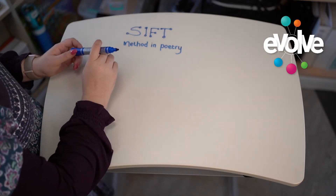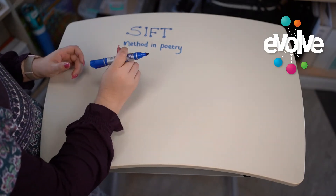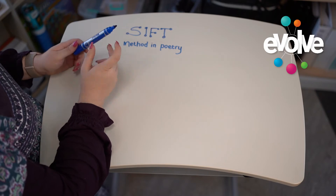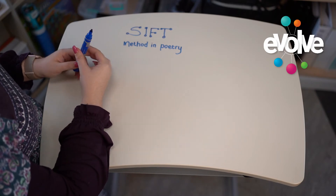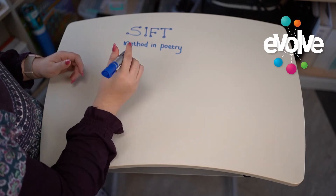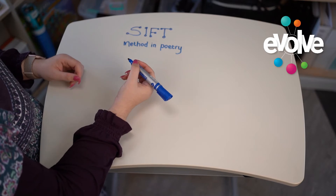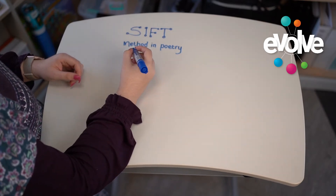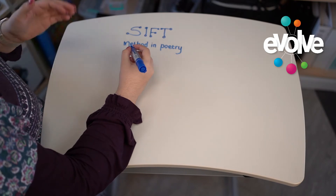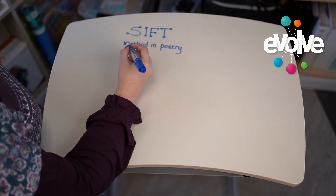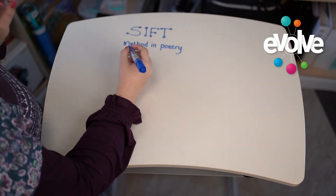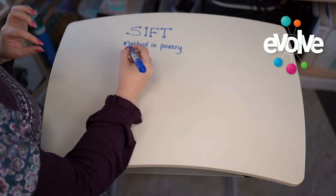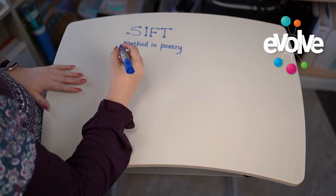When we approach poetry, I use the SIFT method for any poem you will face, whether seen or unseen. Going through these steps, you will be able to summarize, give the intention, the form, and the technique and tone used within your poetry.